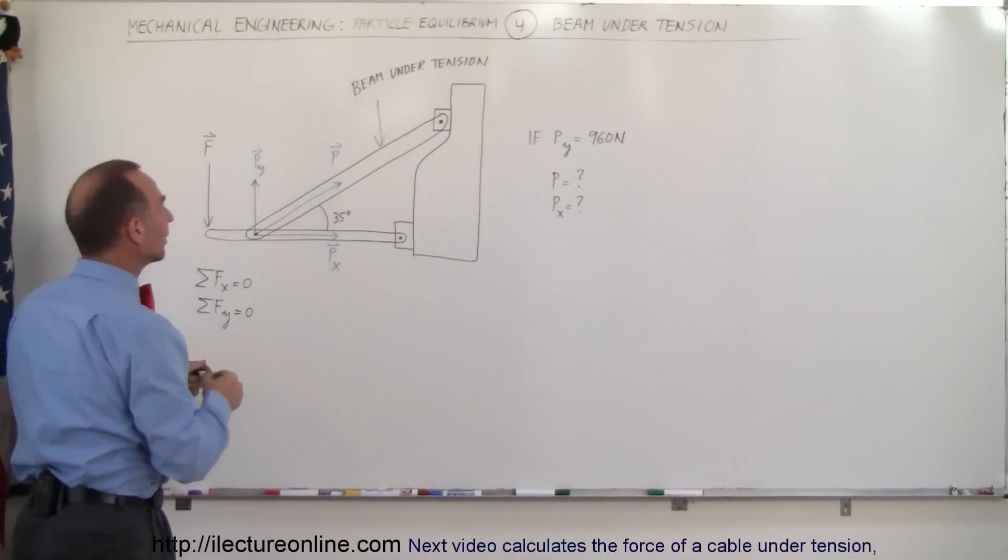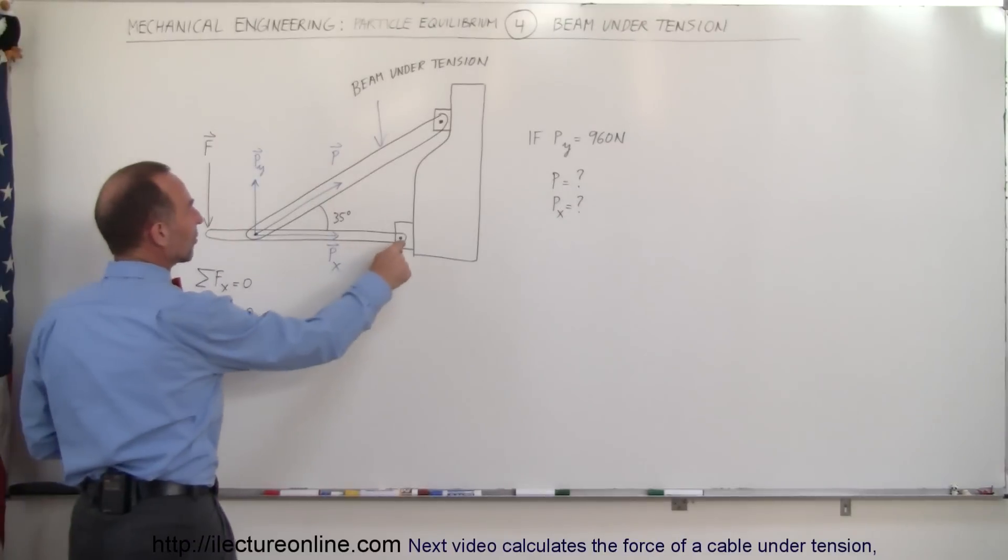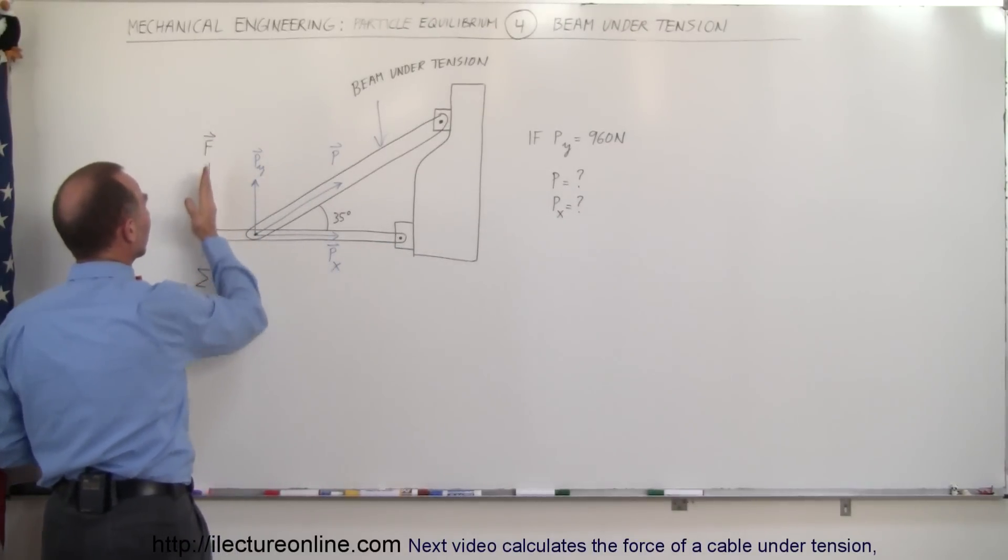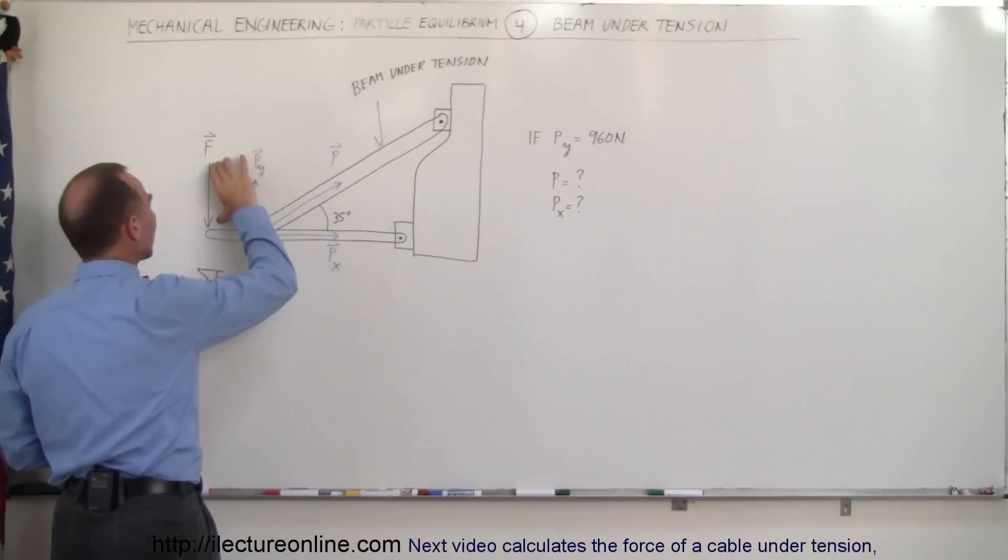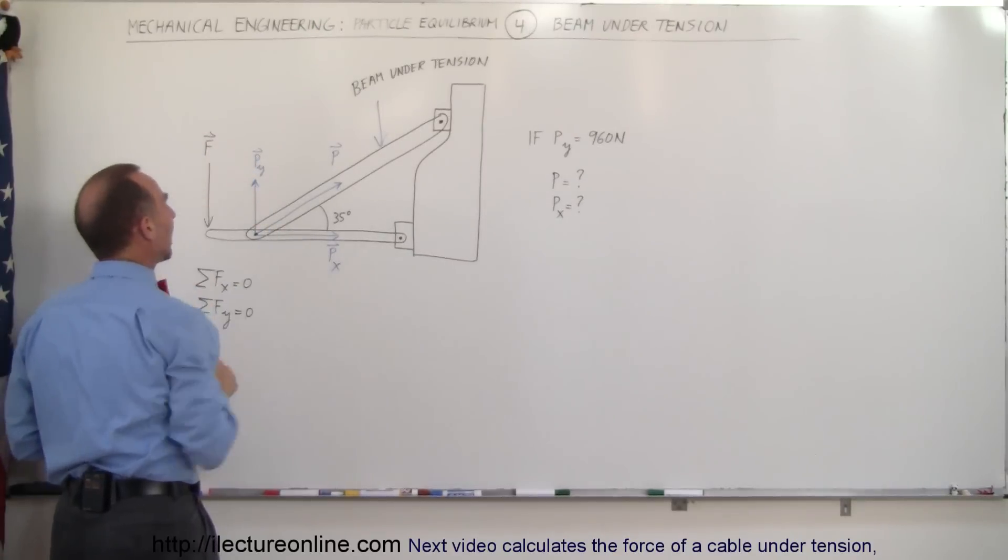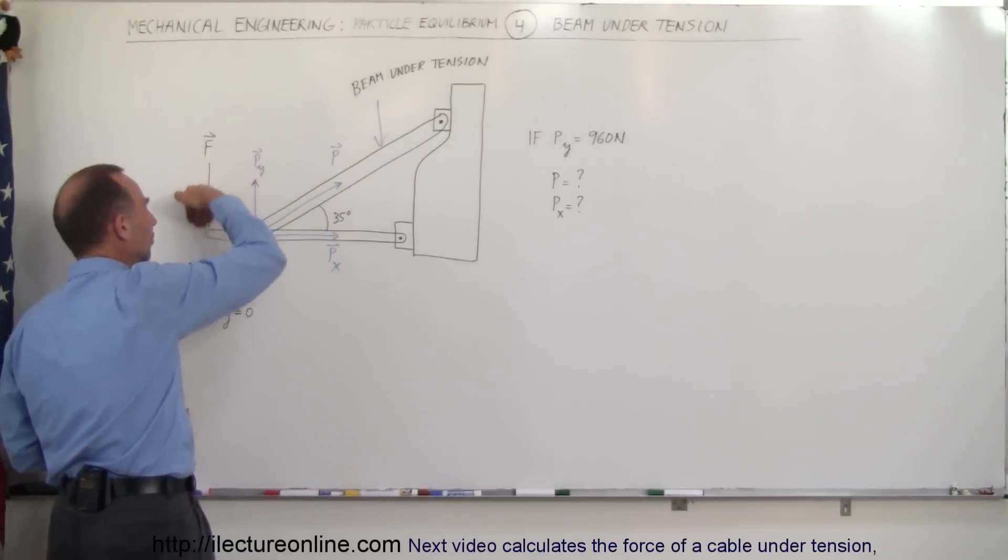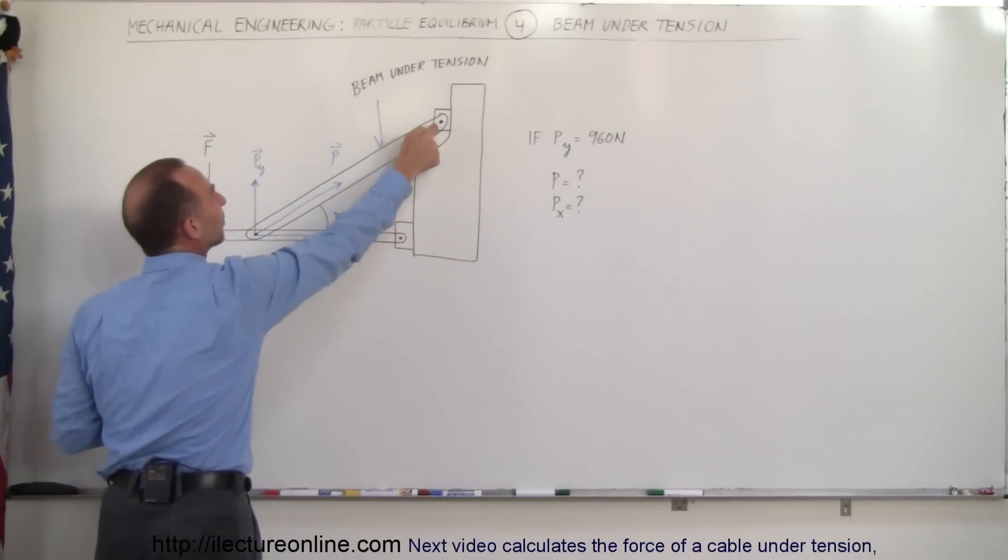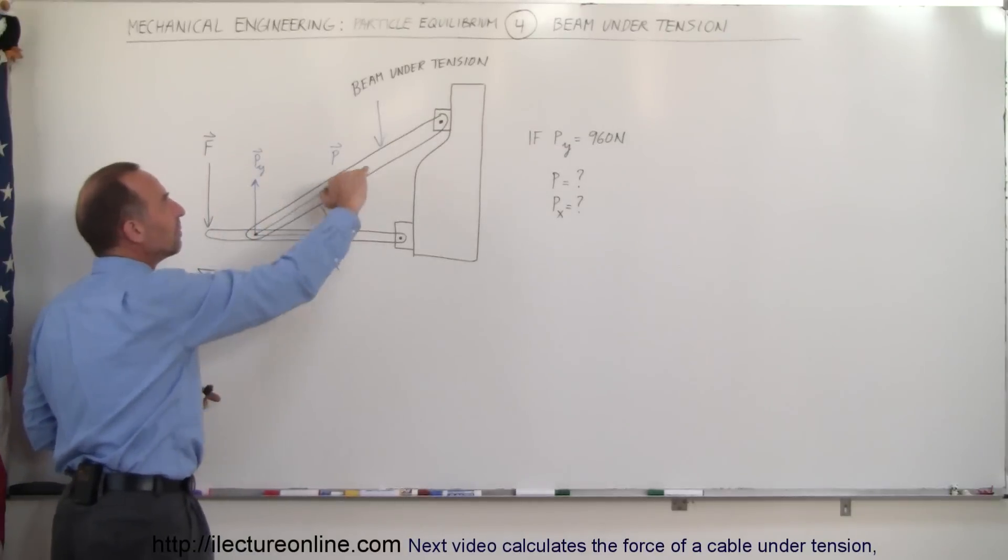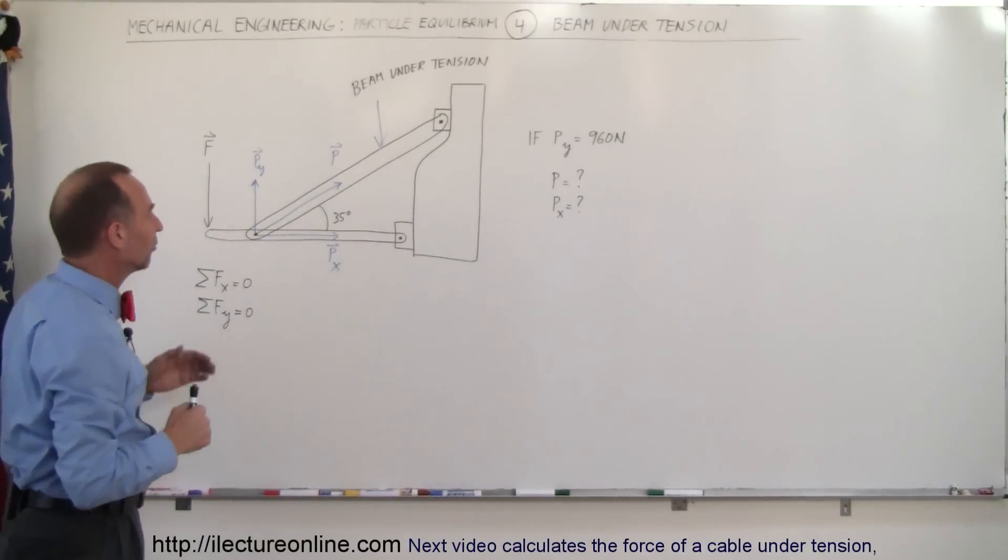Now what's going on here is we have a horizontal beam which is attached to the wall right here, which has a force exerted on it at the end vertically downward. It is being kept from going down by this beam right here, so this beam is under tension.